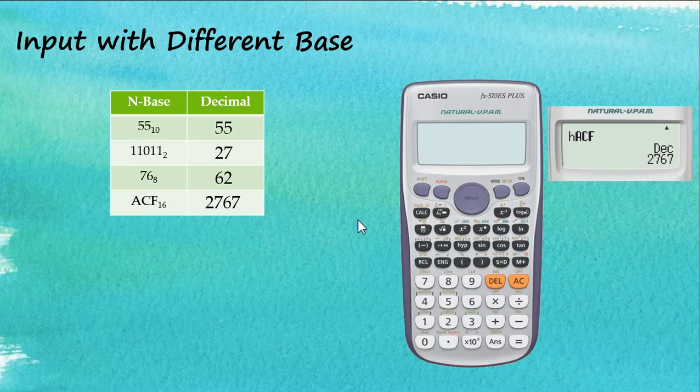That's how we input a number with a different base. We use Shift, Base, and Down to choose the base for a number before we perform the calculations.